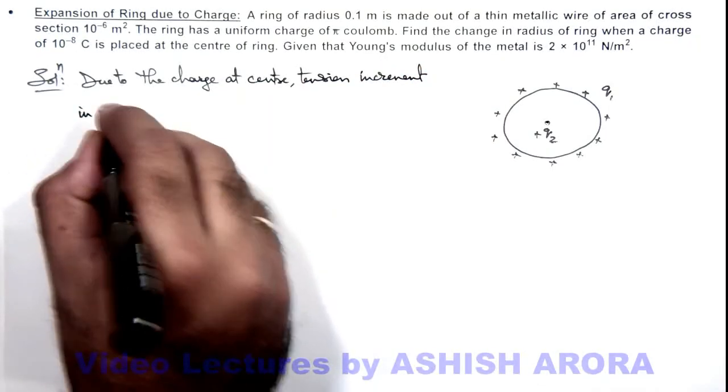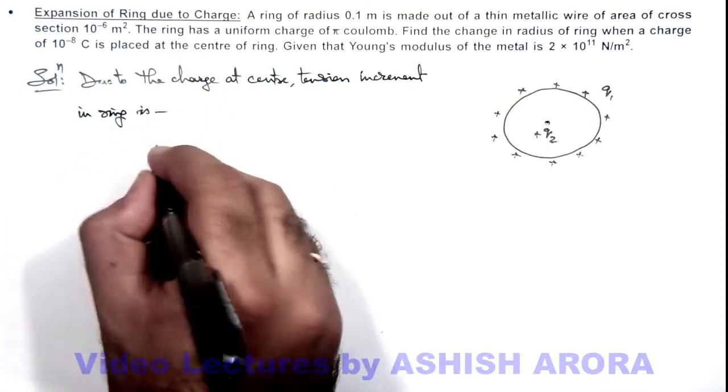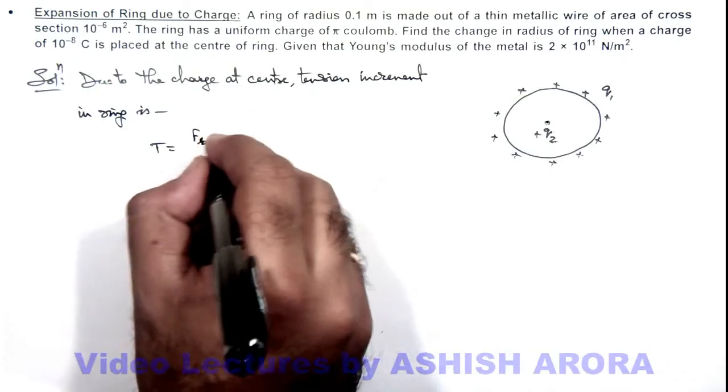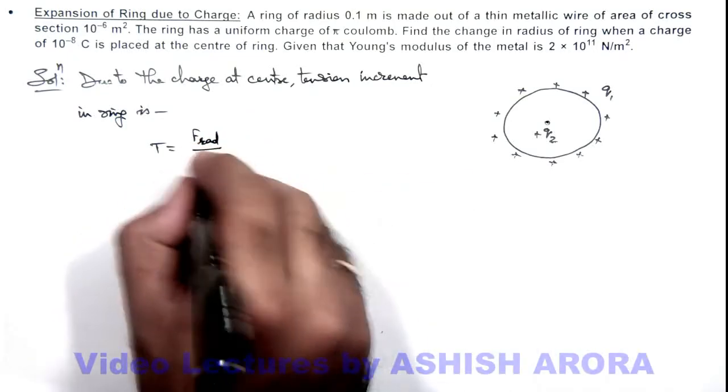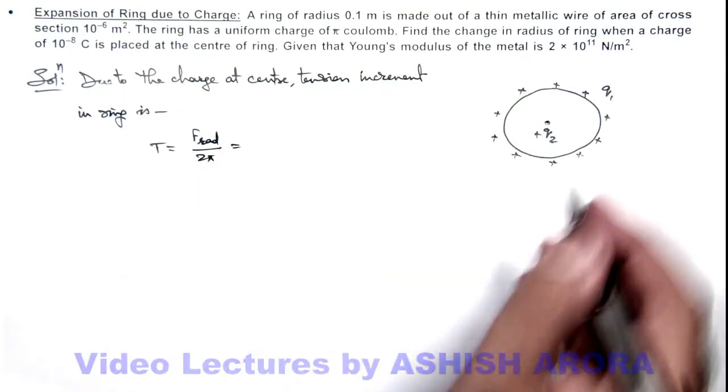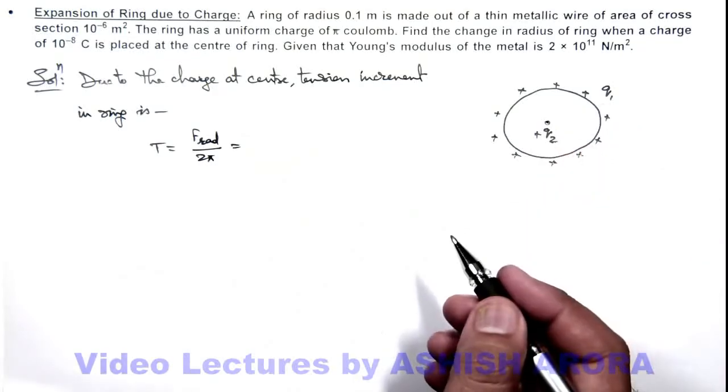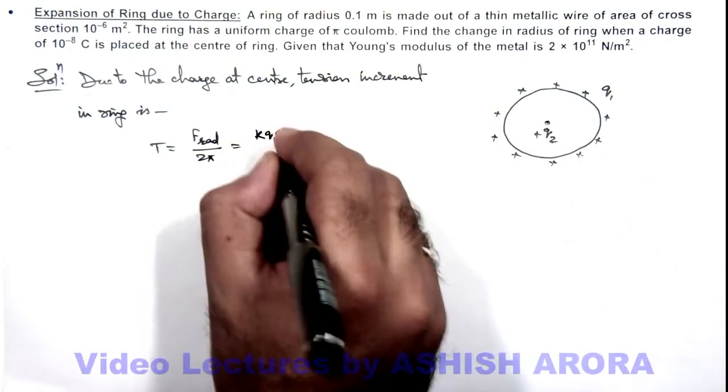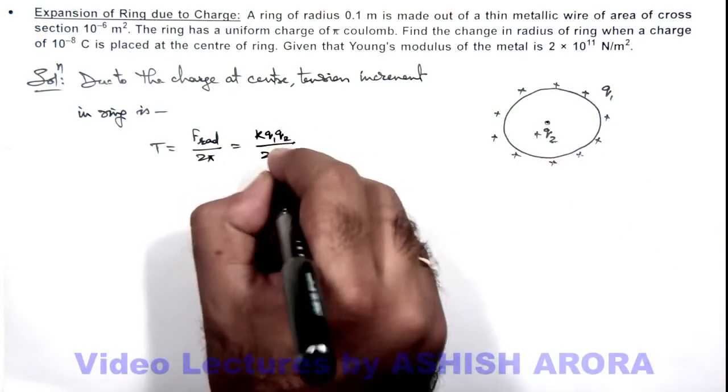The tension increment in ring, we can directly write as sum of the radial scalar force divided by 2π. This can be written as k Q1 Q2 by 2π r square.